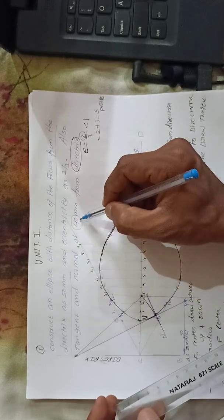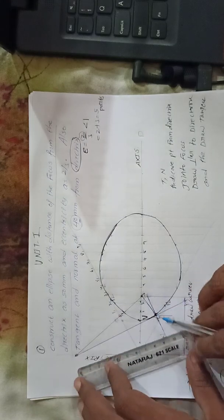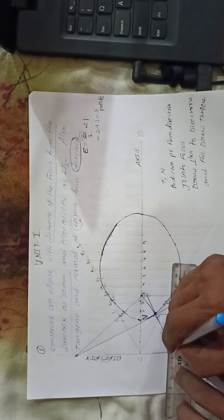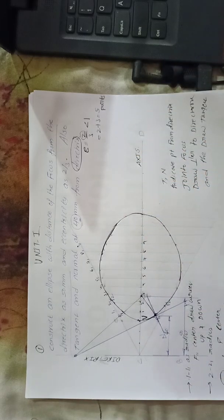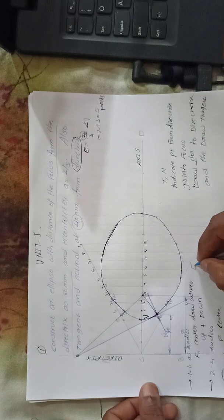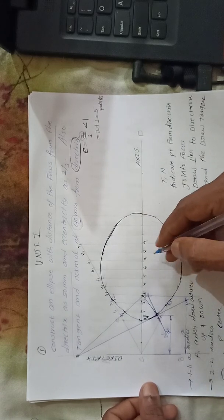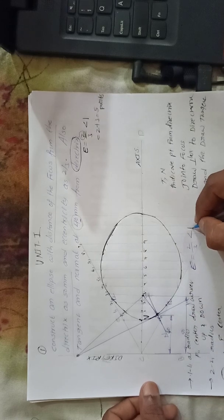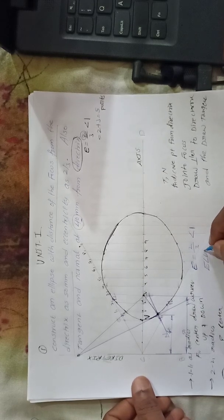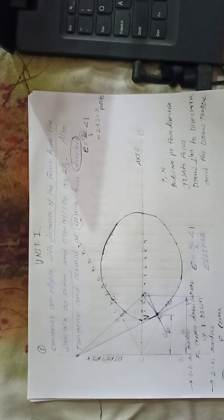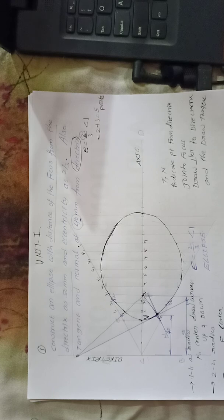Also indicate the other dimension: 40 mm, which is the normal dimension for the point. Two dimensions are given in the problem. For eccentricity, write below the diagram: eccentricity e = 2/3, which is less than 1. Also write 'ELLIPSE' in standard lettering — same-size capital letters — not in your own handwriting. If you have any doubts, comment below and I will clarify.